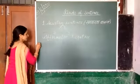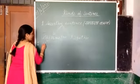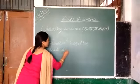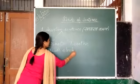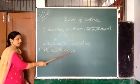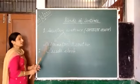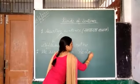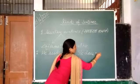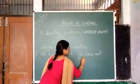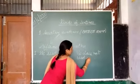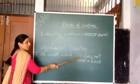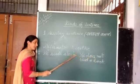First example है Affirmative Sentence का: He reads a book. वह एक किताब पढ़ता है. अब Negative Sentence का example: He does not read a book. वह एक किताब नहीं पढ़ता है.